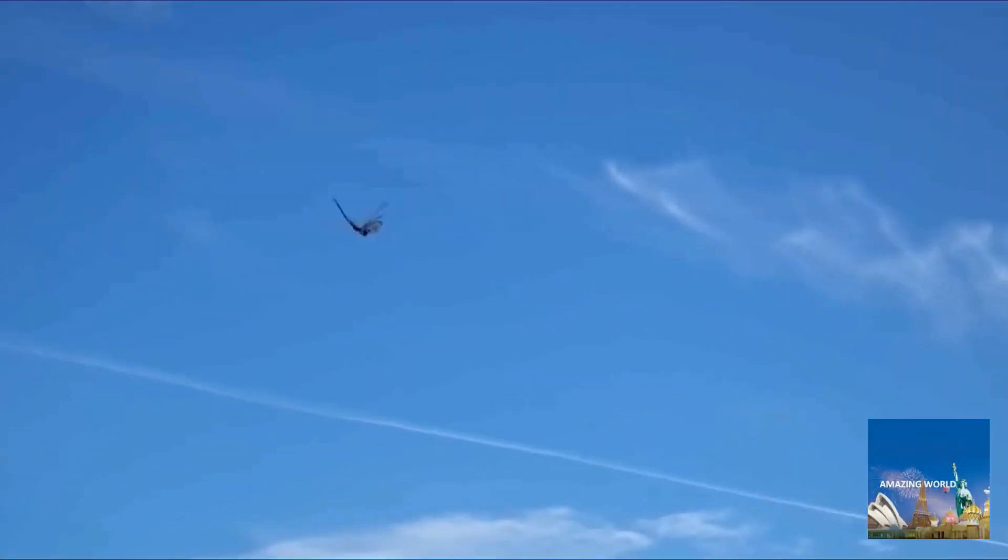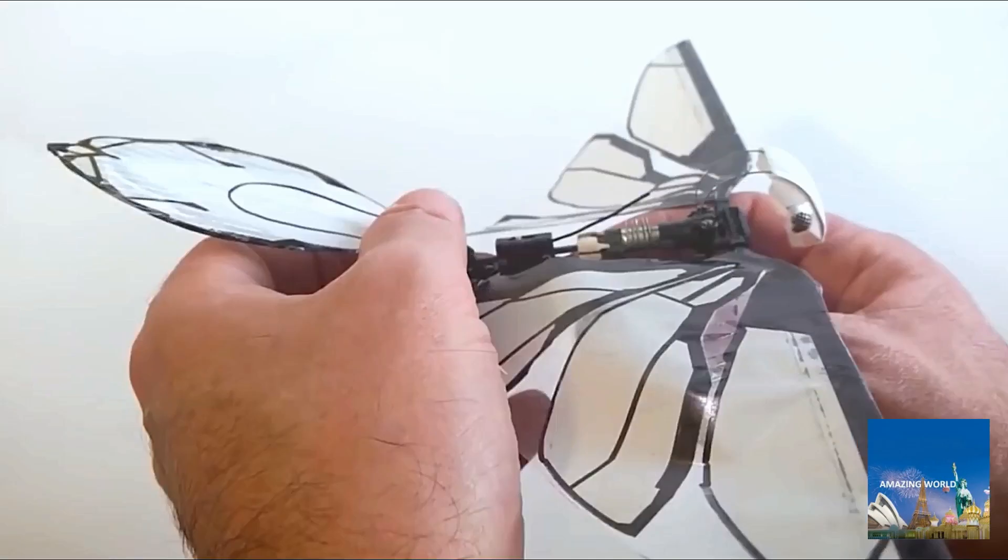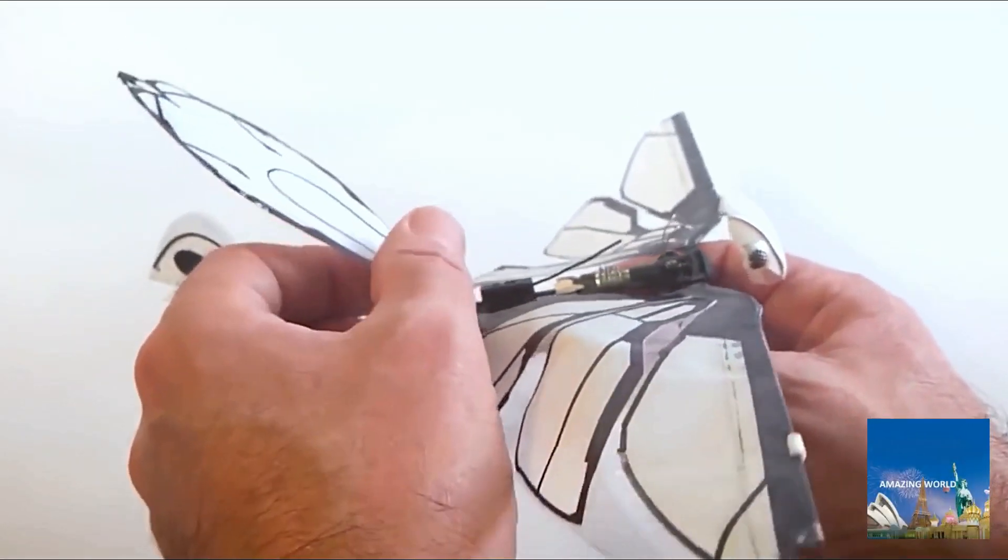Outdoors, MetaFly can enjoy its full speed. By changing the direction of its tail, MetaFly can fly faster when its tail is down or more controllable when it's up.